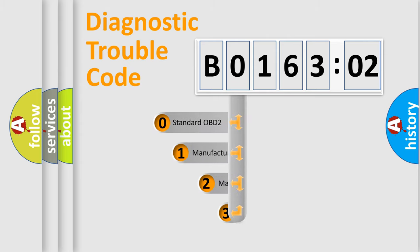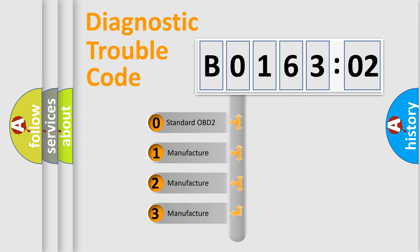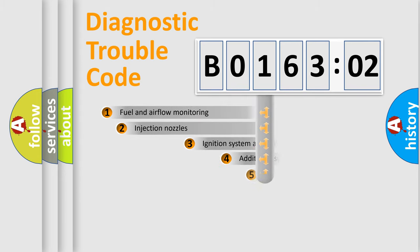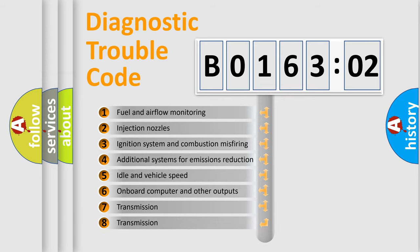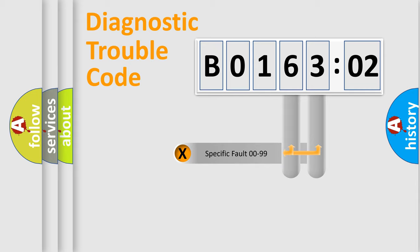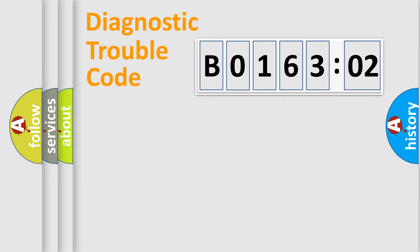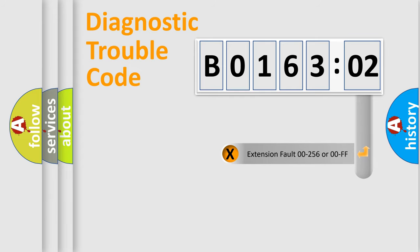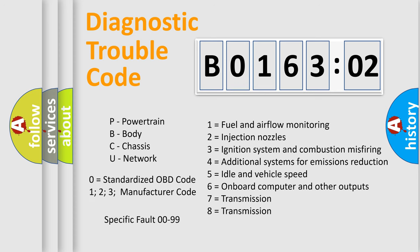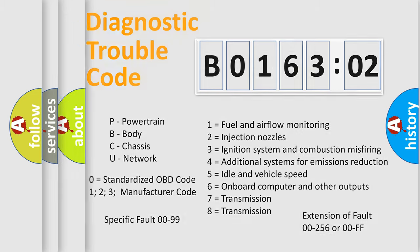This distribution is defined in the first character of the code. If the second character is expressed as 0, it is a standardized error. In the case of numbers 1, 2, or 3, it is a manufacturer-specific error. The third character specifies a subset of errors — this distribution is valid only for the standardized DTC code. Only the last two characters define the specific fault of the group. The add-on to the error code serves to specify the status in more detail, for example, a short to ground. Note that such a division is valid only if the second character code is expressed by the number 0.